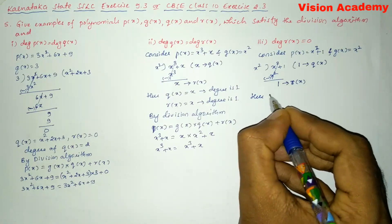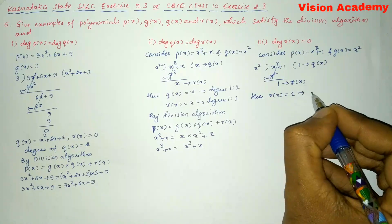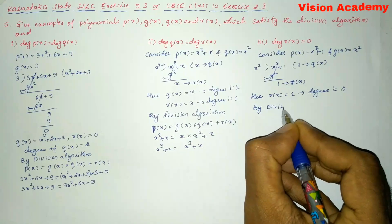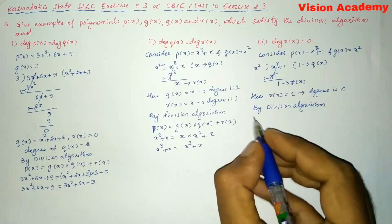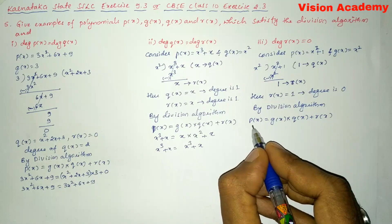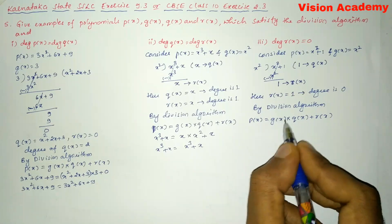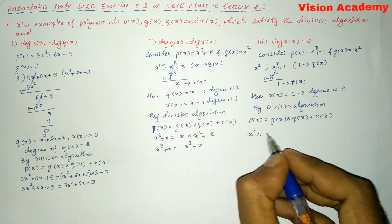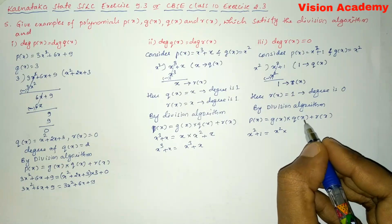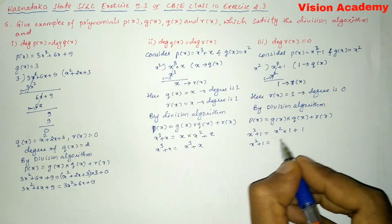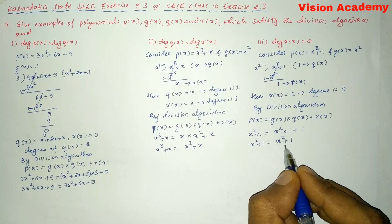Here r(x) = 1 whose degree is zero, satisfying the condition. By the division algorithm, p(x) = g(x) × q(x) + r(x), so x² + 1 = x² × 1 + 1 = x² + 1. LHS equals RHS, hence the division algorithm is satisfied for Roman number 3.